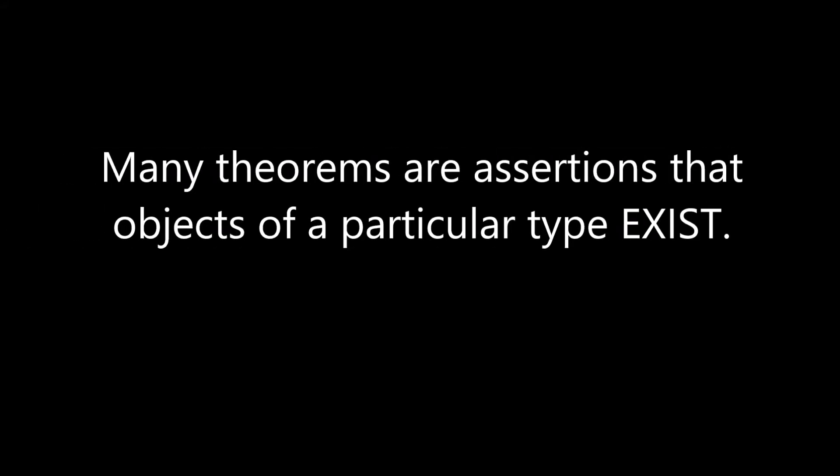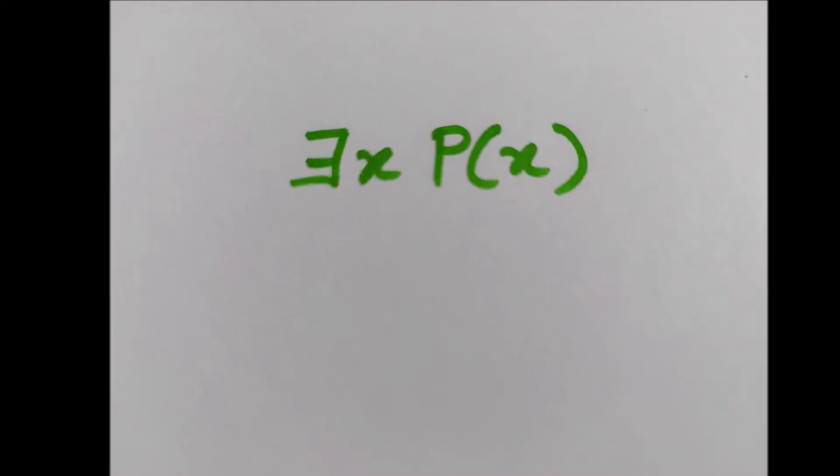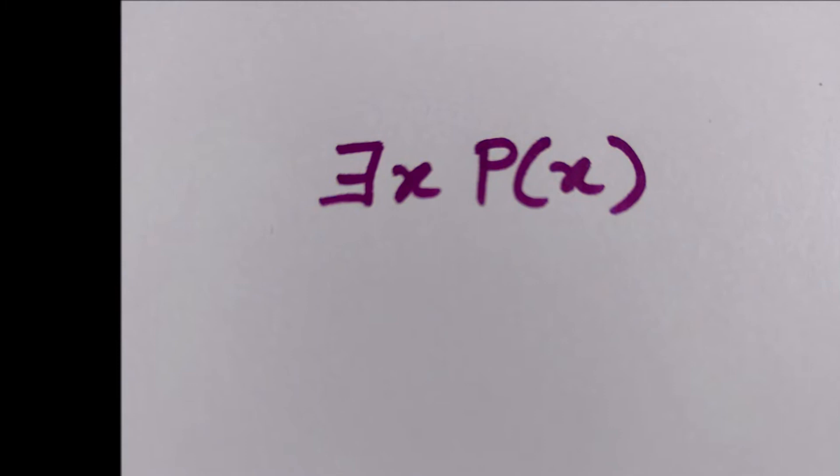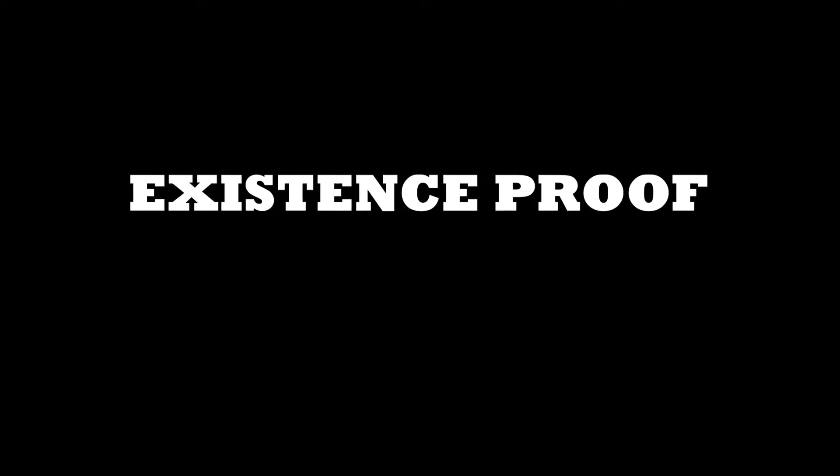Hello friends and welcome to a new video. Many theorems are assertions that objects of a particular type exist. Such theorems assert the existence of a particular type of object in this form: there exists P of X, where P is a predicate. A proof for a proposition of this form is called an existence proof. In this video we are going to see two types of existence proof: constructive and non-constructive.